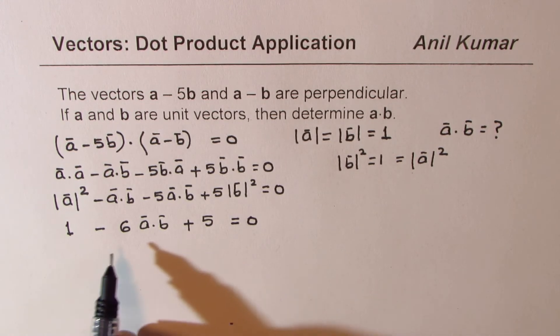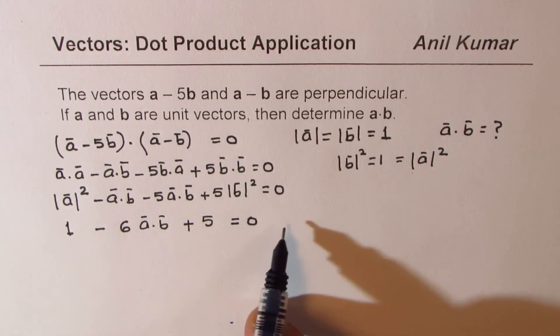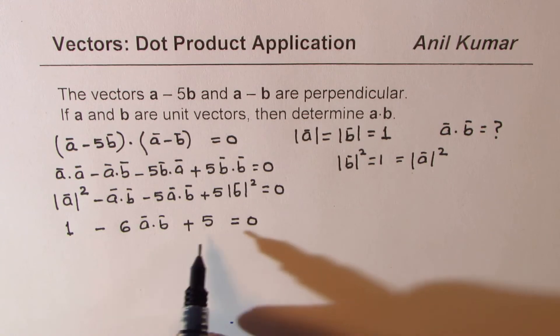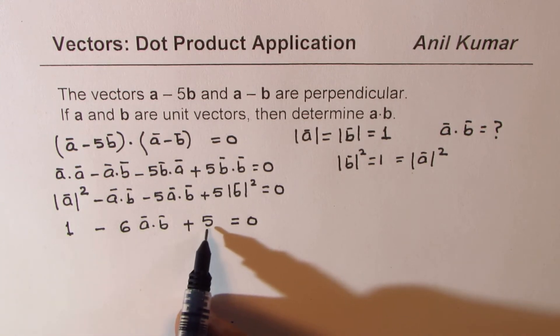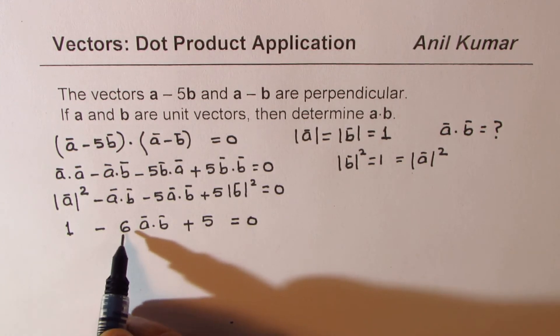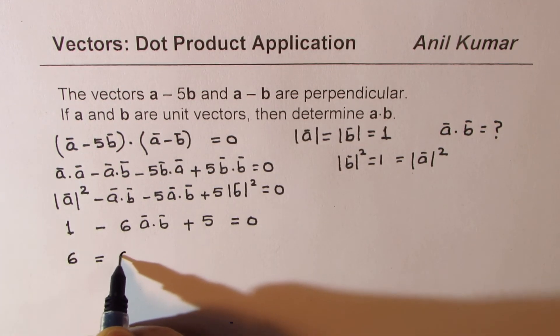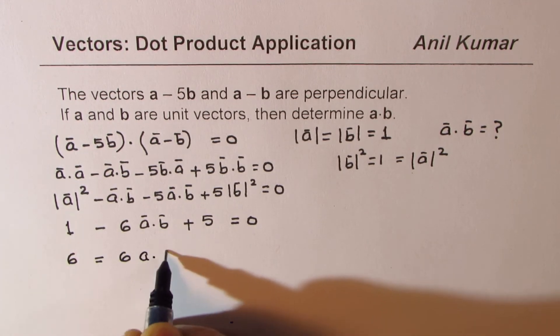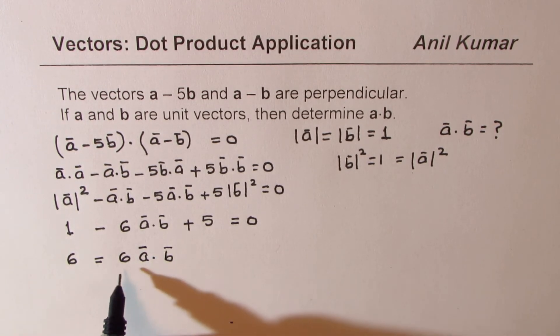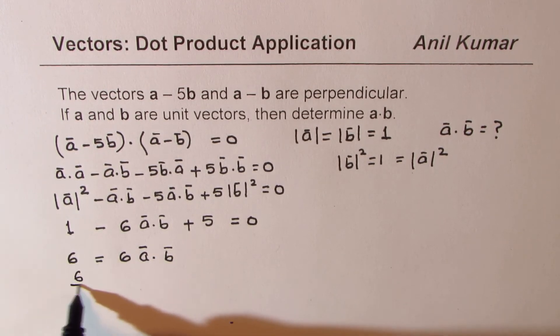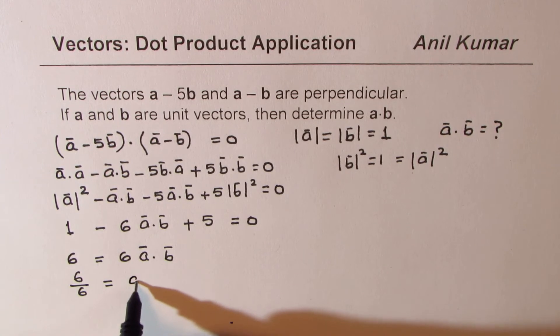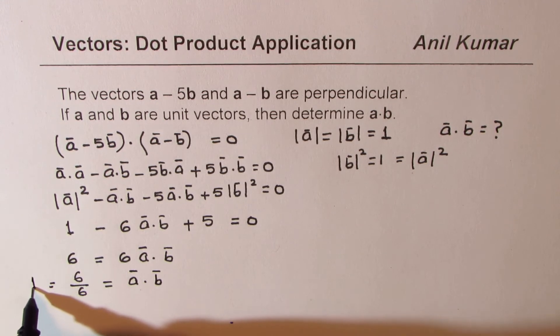So now, we can take these terms, constants, to the right side. 1 plus 5 is 6, so let's take A dot B to the right side, so we get 6 equals to 6A dot B. Now, dividing by 6, that is 6 over 6, is basically A dot B. So A dot B in this case is equal to just 1. Is that clear to you?